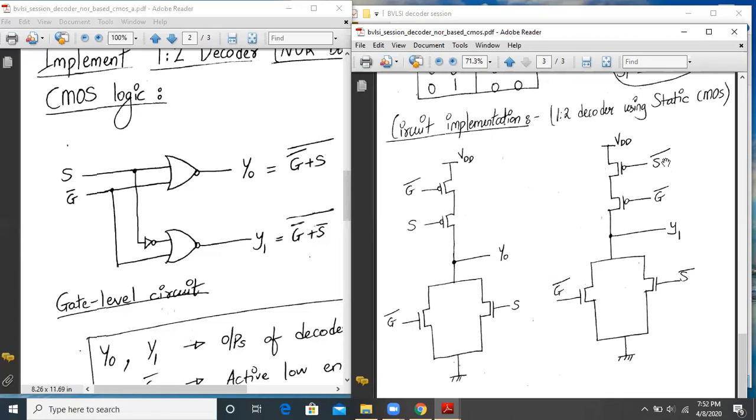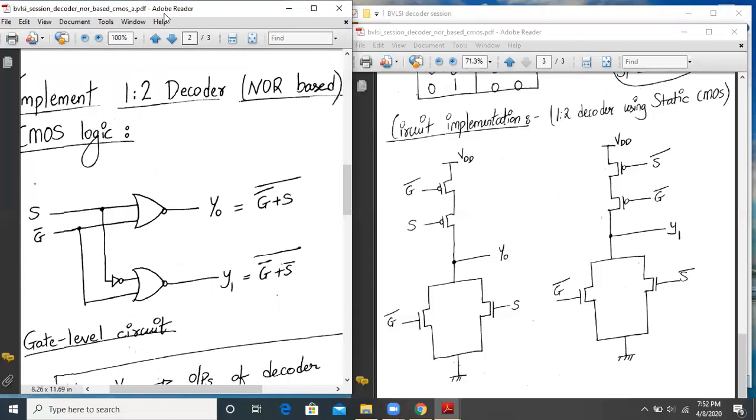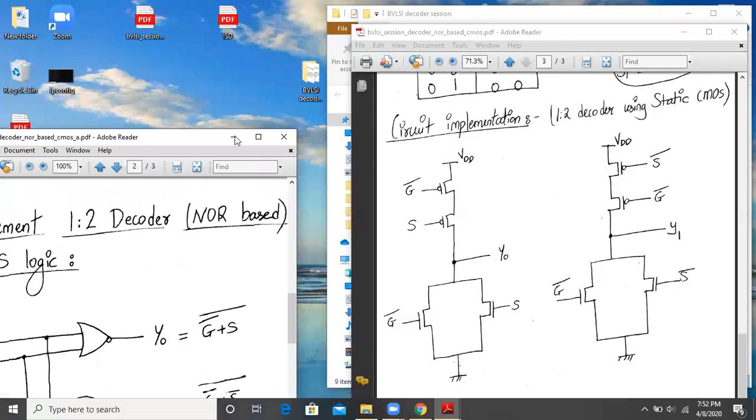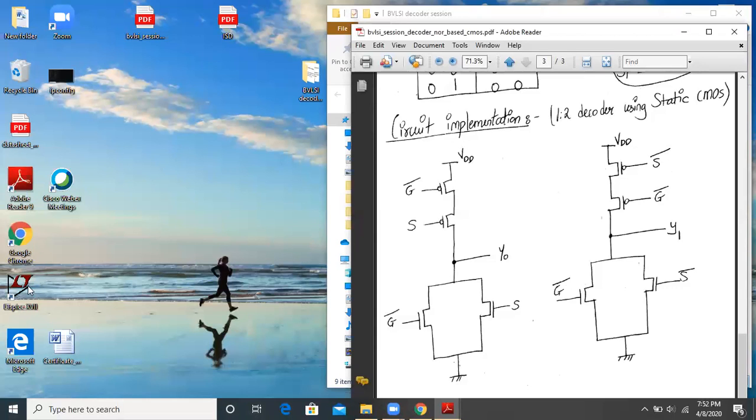So the total transistor count here will be four here, four here, so total eight, plus you require additional two transistors to implement S and S-bar. Now, without wasting any time, let us go back to the LTSpice simulation of the same. So let me just open up the LTSpice simulation.